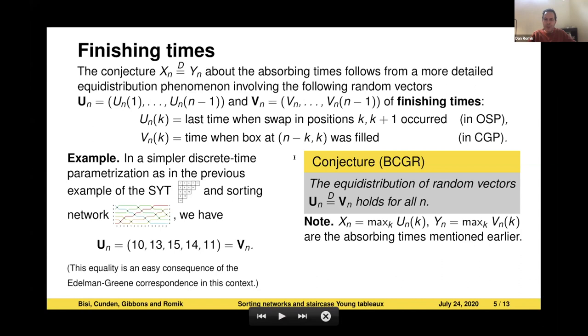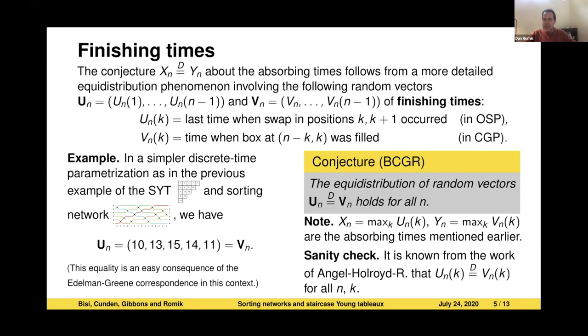Now, can we hope for such a conjecture to be true? Here's just a small sanity check. It's consistent with something that we already know to be true, which is from my paper with Angel and Horvath. It's not a very hard thing to explain, we understand it quite well, that for each coordinate k, the k coordinate U_n(k) has the same distribution as V_n(k). So that much is known, but note that that is a much weaker statement. Here we're saying something about the joint distribution of U_n and V_n. So it's much stronger and more difficult to prove. In fact, this conjecture is still open, so we still don't understand why it's true. There's definitely something interesting going on that needs to be explained.